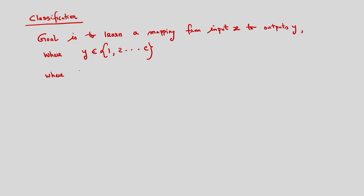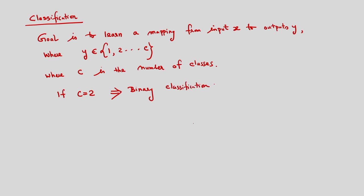Where c is the number of classes. If I consider c equal to 2, that means only two classes are considered — it is a binary classification problem. Corresponding to c equal to 2, y has only two outcomes or values: 0 and 1. If c is greater than 2, that is actually the multi-class classification.